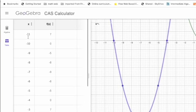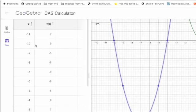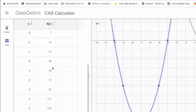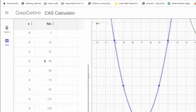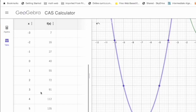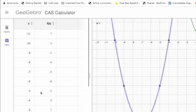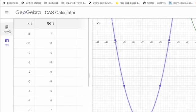Now I have a table of values. So x and y, negative 11, 7, negative 10, 0. And if I continue, I can see all my values here. So this is the way how you can use CAS calculator.